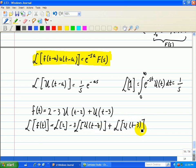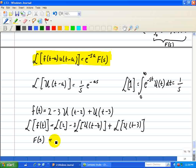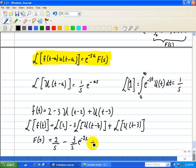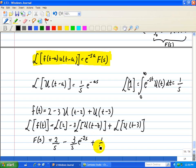Well, this is just f of s here, so we have basically 2 over s, minus 3 over s, but we multiply that by e to the minus 2s, plus 1 over s, e to the minus 3s.